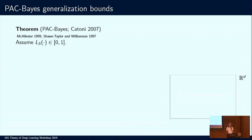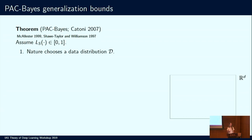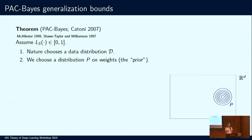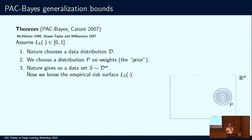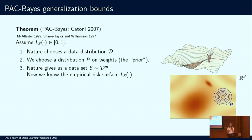There are many PAC-Bayes theorems, and the particular one I'm presenting is due to Cotoni. We deal with a bounded loss function between 0 and 1. First, nature chooses a data distribution D. Then we choose a distribution P on weights — the prior. Then nature gives us a dataset S sampled IID from some unknown data distribution. Now we know the empirical risk surface. In this particular example, we have two different minima: one is quite wide and another is quite narrow.